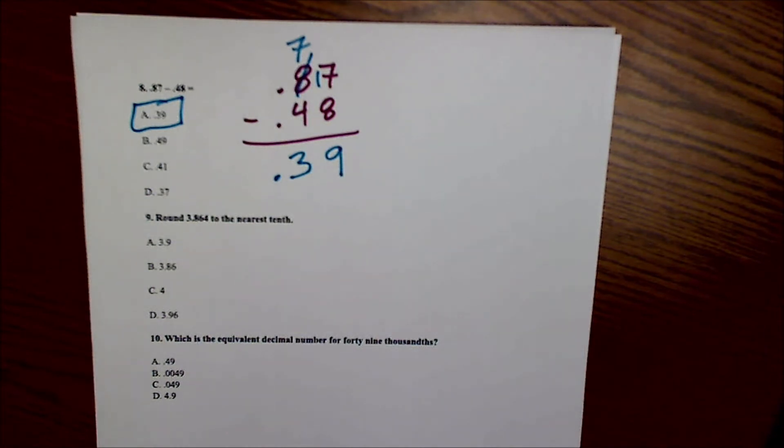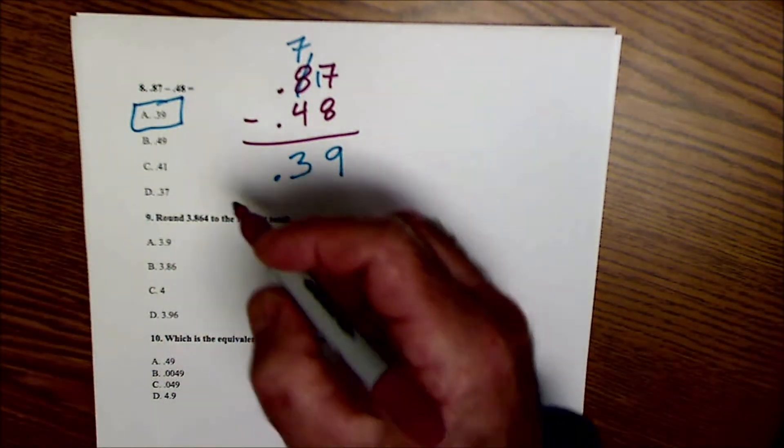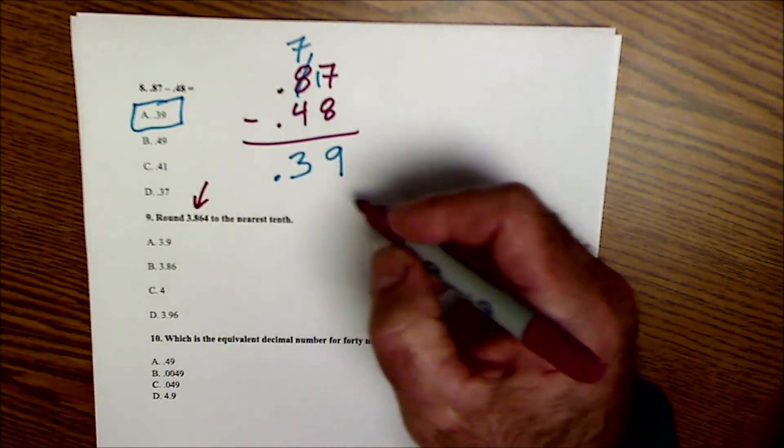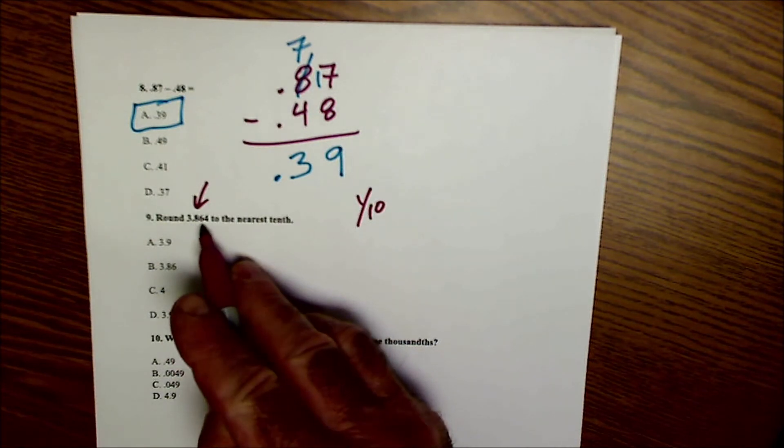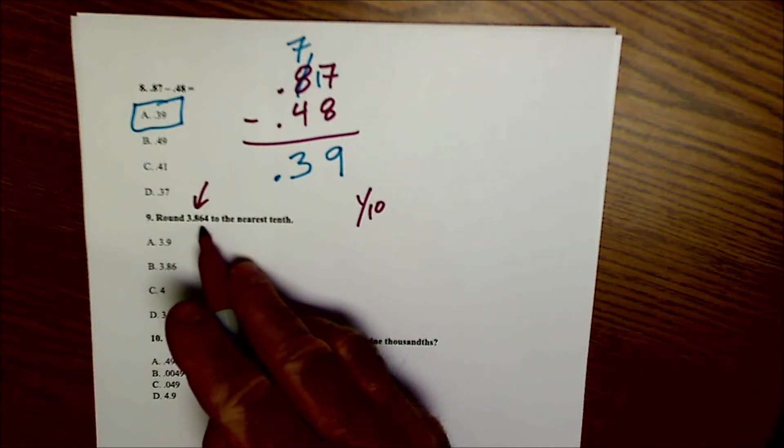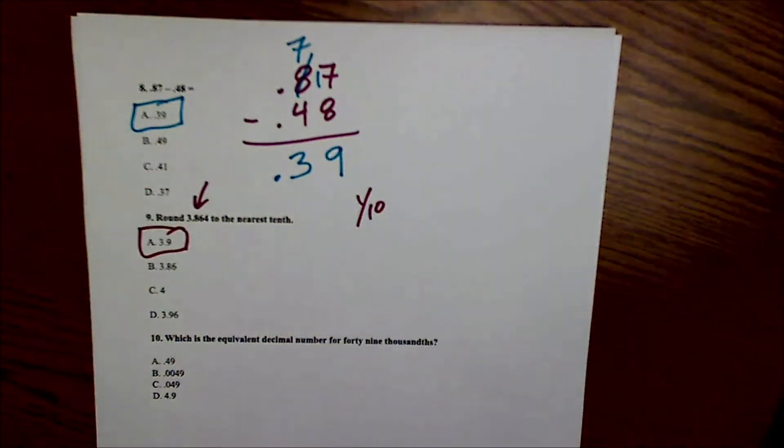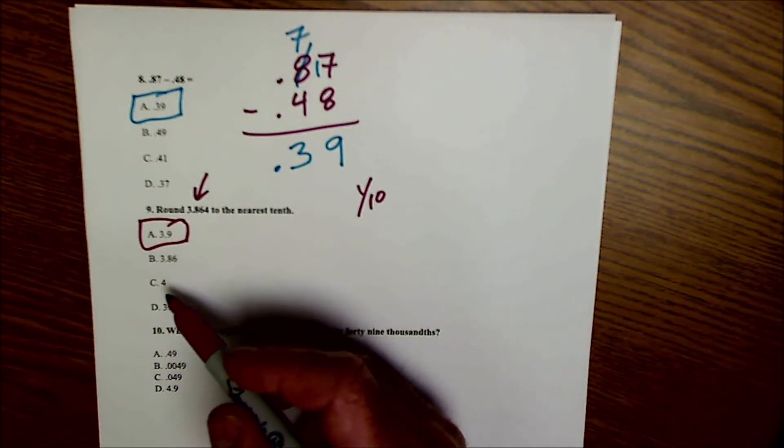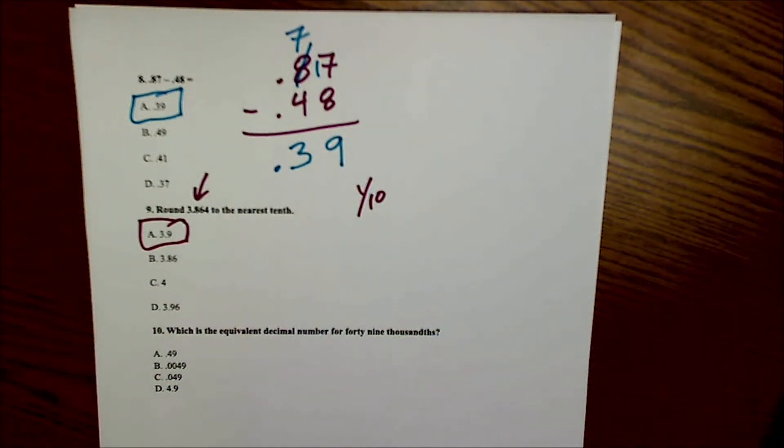Number 9, round this number 3.864 to the nearest tenth. The tenth is the 1 tenth, that place is right after the decimal point. The hundredths is a 6, so I round up, it's greater than 5, so I round up. I round that up to 3.9 and that's to the tenth place, so that's answer A. Okay, this is rounded to the hundredths place, this is rounded to the hundredths place, this is rounded to the 1s, and this is to the hundredths as well.